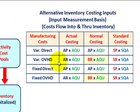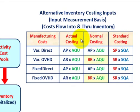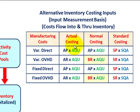Finally, let's look at our alternative inventory costing inputs — the three different cost measurement bases. We have actual costing, normal costing, or standard costing, and any of the three can be used for activity-based costing. These determine how we assign manufacturing costs, which include variable direct, variable overhead, fixed direct, and fixed overhead amounts. For actual costing, you take the actual price or rate for your manufacturing cost times the actual quantity used.